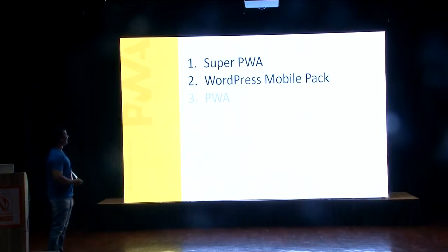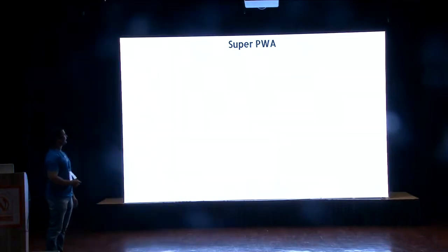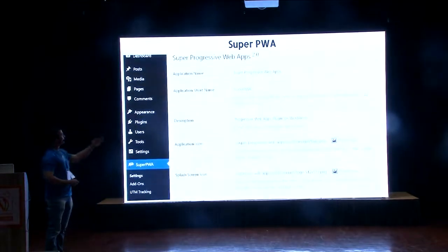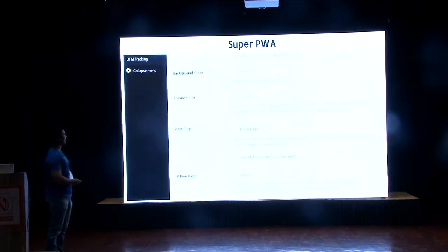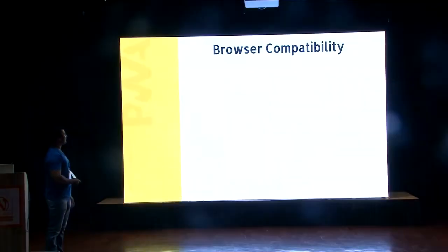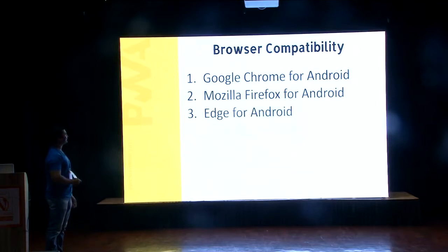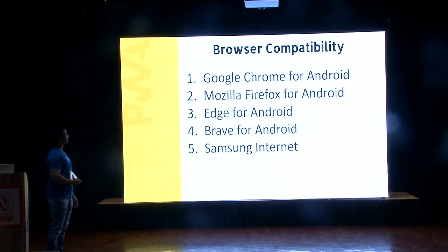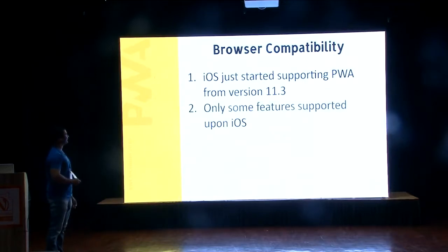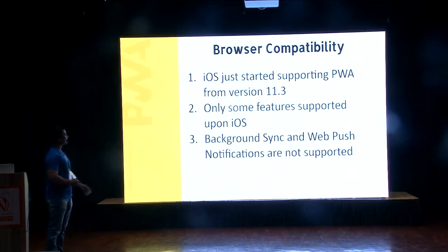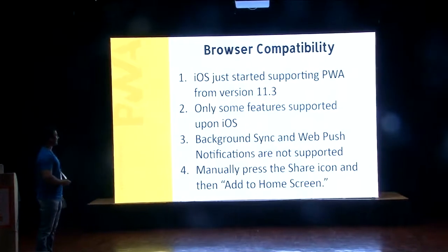Lighthouse performance — if we do a lighthouse performance audit for the app we just built, the results look great. For WordPress, different plugins are available: Super PWA, WordPress Mobile Pack, and PWA. You can use the Super PWA plugin to convert your WordPress website into a PWA with just basic settings. Browser compatibility: Google, Mozilla, Edge, Brave, and Samsung Internet are all compatible. For iOS, they just started supporting PWA from version 11.3 — only some features are supported; background sync and web push notifications are currently not supported, and add to home screen must be done manually.